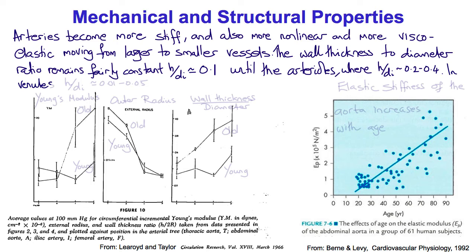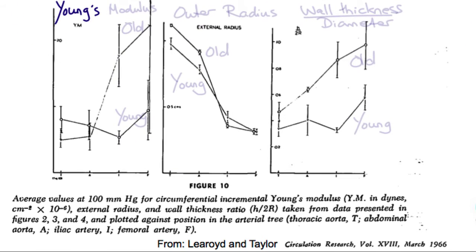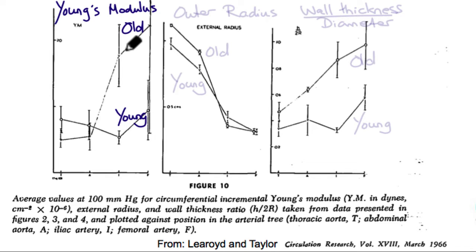In the venules and veins this ratio is smaller, as low as 0.01 to 0.05. Here we see a plot of the Young's modulus at different levels of the aorta, going from the top down towards the femoral artery, in older subjects and younger subjects. You can see particularly in the older subjects the stiffness of the vessel increases towards the smaller arteries.